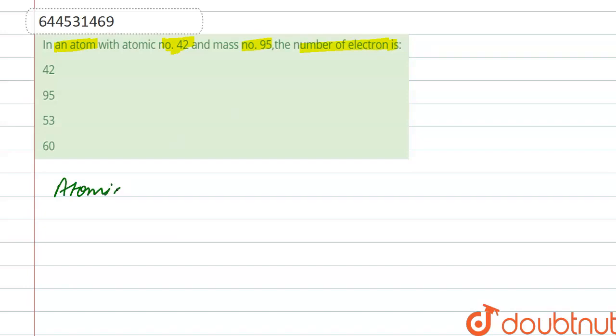Atomic number is given, that is 42. So we know that atomic number is the number of protons.